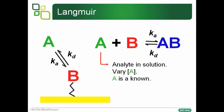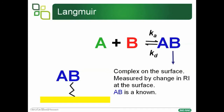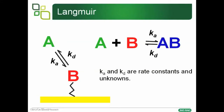A is the analyte in the solution. We inject different concentrations of A over the ligand B. Thus A is known — it's the concentrations that we inject over our ligand. B is the ligand on the surface. Whilst we know how much we coupled or captured, B is an unknown because the amount captured or coupled is not the same as the activity. But we can model B in terms of how much A combined to it. AB is the amount of the complex on the surface — this is what the biosensor is measuring, the change in refractive index at the surface, which is directly related to the formation of AB. The other unknowns are the rate constants Ka and Kd.